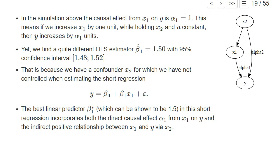To repeat, in our simulation the true causal effect of x1 on y was α₁ equal to one. If we increase x1 by one unit, holding x2 constant and also u constant, then y would increase by α₁ units. Yet we find a quite different OLS estimator β̂₁ of 1.5 with also a narrow confidence interval between 1.48 and 1.52.